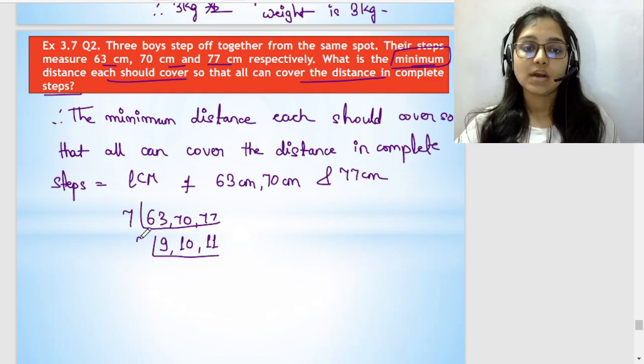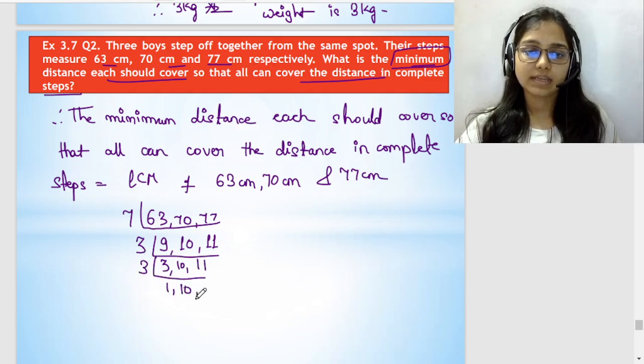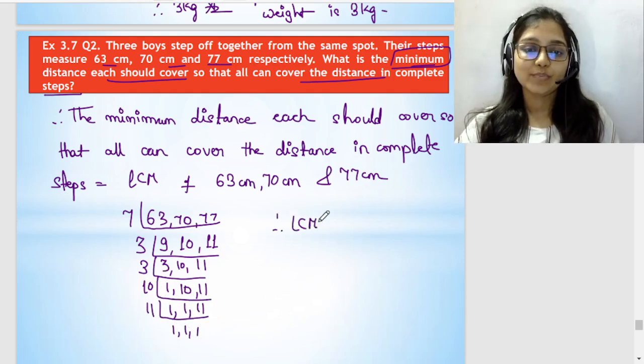Then we can go for 3. 3 times 3 is 9, 10 and 11. Then we can go for 11, giving us 1, 1, 11. Then 1, 1, 1.